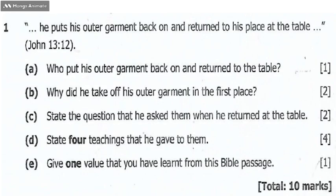Question one was as follows: 'He puts his outer garment back on and returned to his place at the table.' This means they have only picked the middle section of the passage — some statements have been cut out before the beginning and before the end. So for us to understand the passage fully, we are going to read the entire passage.